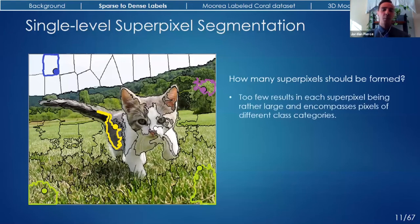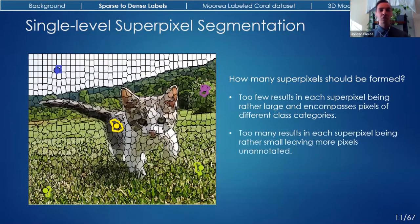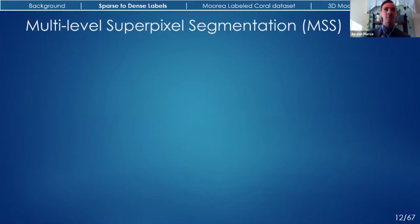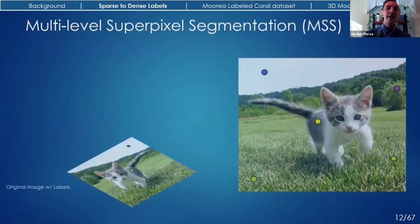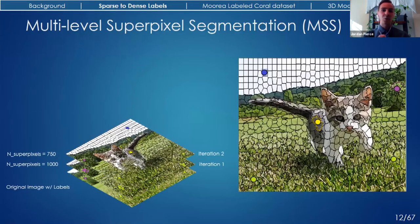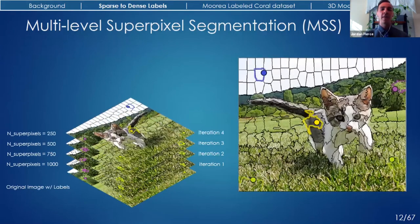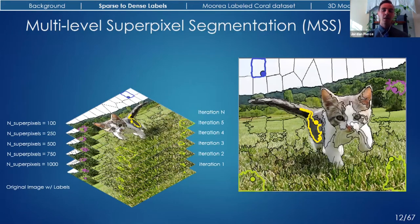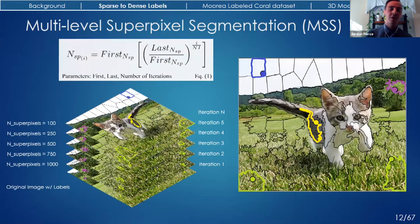Say we have an image with some existing sparse labels provided by a trained expert, and we segment that image into superpixels. We could then propagate the class of the label to all other pixels within the same superpixel. But there are issues: if superpixels are too large, they encompass multiple class categories, meaning some pixels will be incorrectly labeled. If superpixels are too small and there aren't enough sparse labels, most pixels are left unannotated. The solution was to segment the image multiple times — during the first iteration, many superpixels are formed to capture fine-scale details, and for each successive iteration, that number decreases to ensure all pixels receive at least one label. The algorithm only requires three parameter values from the user.